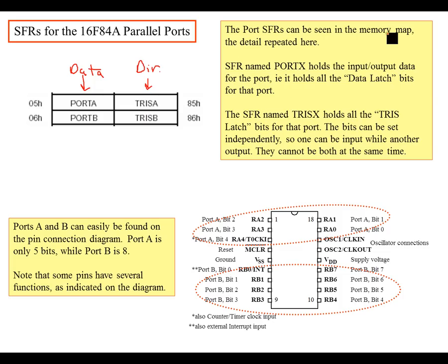The port special function registers can be seen in the memory map in the textbook as well as on the data sheet. Special function register named port X holds the input output data for the port. If you configure the direction here to be an input, then the values, the zeros and ones here are actually the inputs that are being read. And if this is configured as an output, then you actually write zeros and ones here to get the data on the output. Your TRIS A is going to have zeros and ones depending on your direction as well.